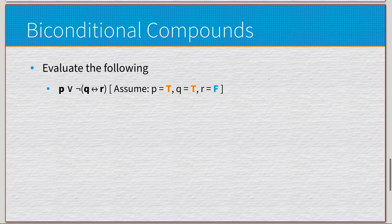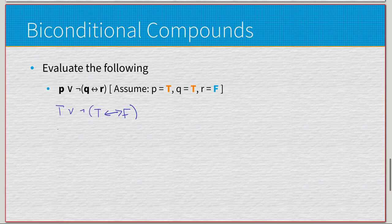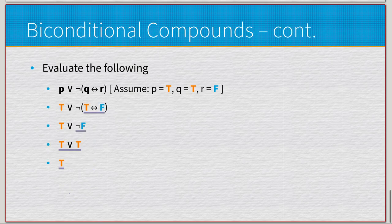Now moving on, we can take a look at this: P disjunction negation Q, biconditional R. So first let's substitute these values in. We have true disjoined with negation of true, biconditional false. We have parentheses, let's do that first. So true disjoined with negation, these two differ in the biconditional, that gives us false. Negation of false is true, so true disjoined with true is true.